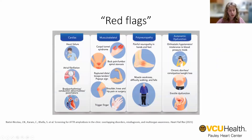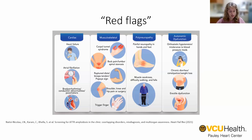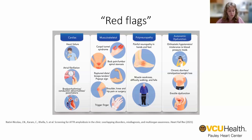These patients will likely follow with multiple different specialists. They often will follow with cardiology for their heart failure and conduction disease. They will often see ortho for their history of carpal tunnel syndrome, trigger finger, or large joint arthritis. And they may see neurology for the burning and tingling in their hands and feet, or for symptoms of dysautonomia, such as orthostasis, alternating constipation and diarrhea, and erectile dysfunction.